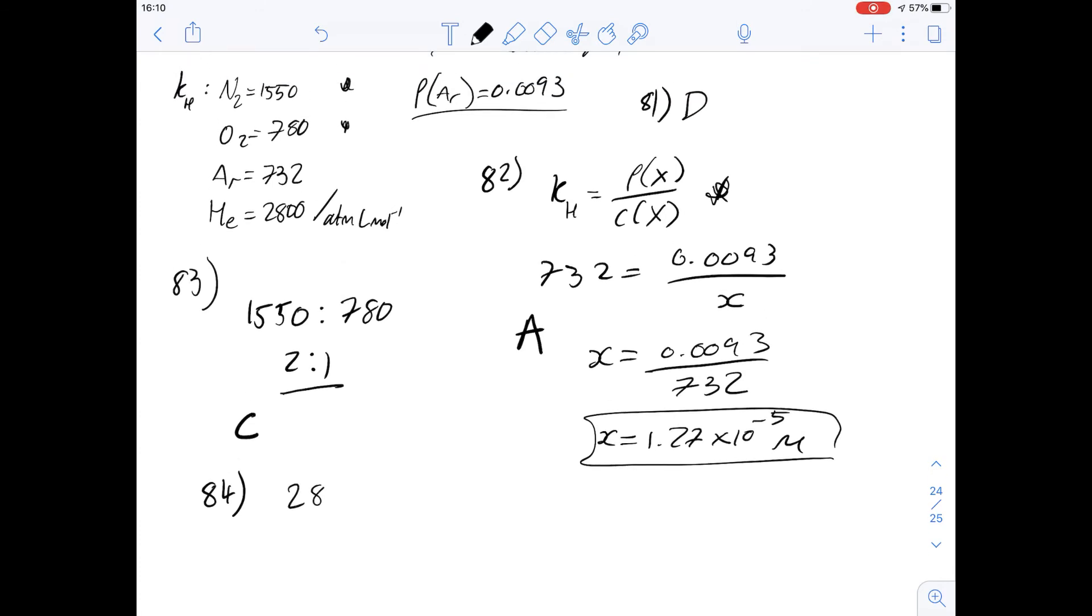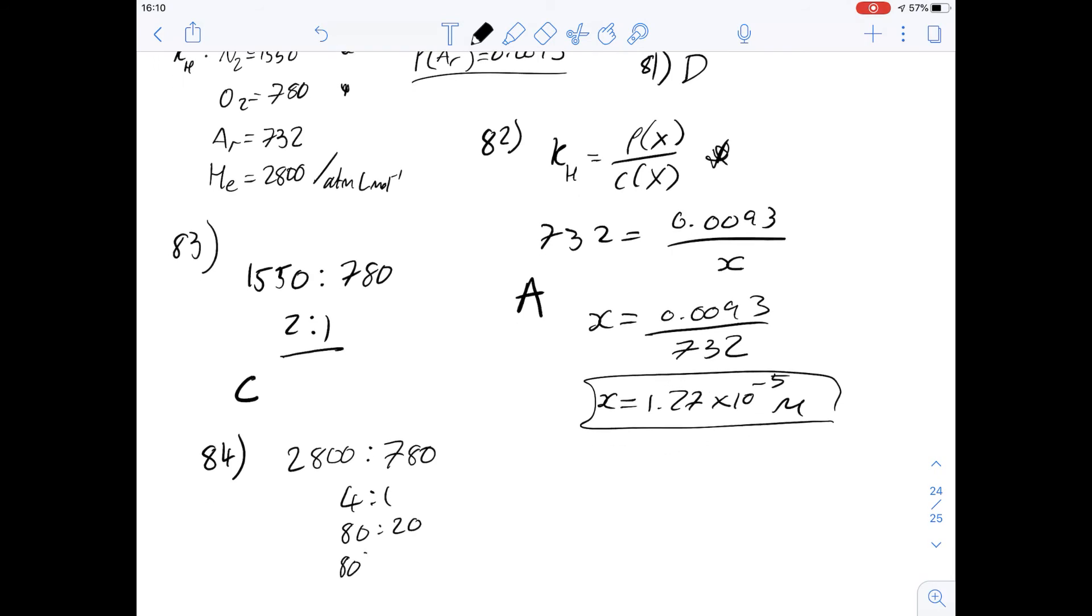So for helium we've got 2800, and for oxygen we've got a ratio of 780. This is roughly a 4 to 1 ratio, which you could also write as an 80-20 ratio. So we can say that 80% of the blood would be helium to 20% oxygen. And therefore that gives us an answer for 84 of D.